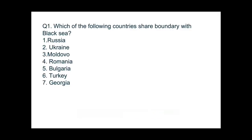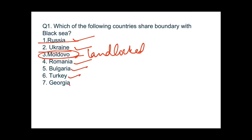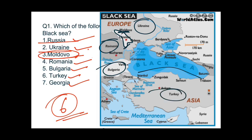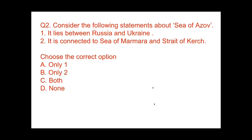Let's start with Question 1. Don't forget to comment your score in the comment box. Question 1: which of the following countries share boundaries with the Black Sea? Checking the options — Russia: yes; Ukraine: yes; Moldova: no, it is a landlocked country; Romania: yes; Bulgaria: yes; Turkey: yes; Georgia: yes. That means six countries touch the boundary with the Black Sea. You can see on the map: Ukraine, Romania, Bulgaria, Turkey, Georgia, and Russia.